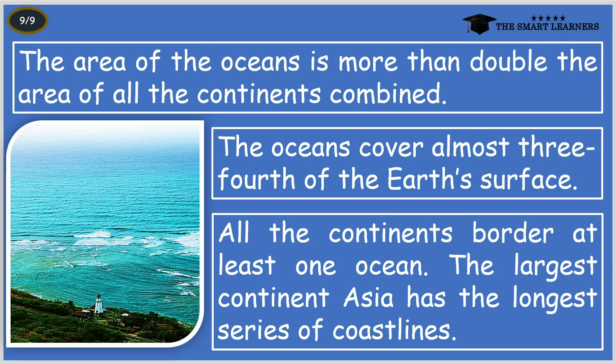The area of the oceans is more than double the area of all the continents combined. The oceans cover almost three-fourths of the Earth's surface, and all the continents border at least one ocean. The largest continent, Asia, has the longest series of coastlines.